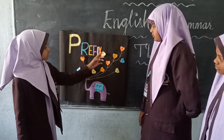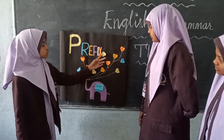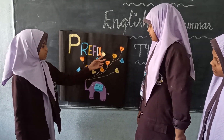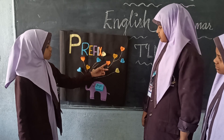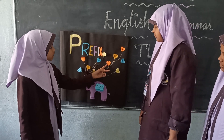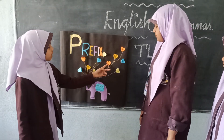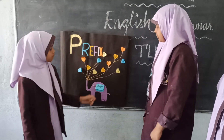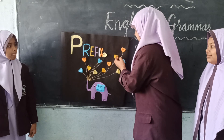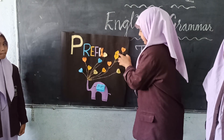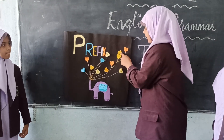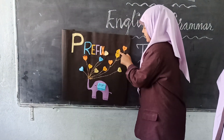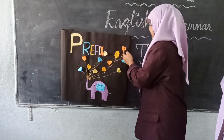'Illegal' — the prefix word is IL. 'Improper' — the prefix word is IN. 'Disappear' — the prefix word is DIS.